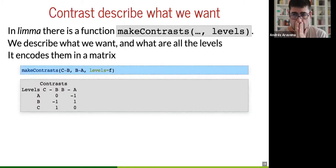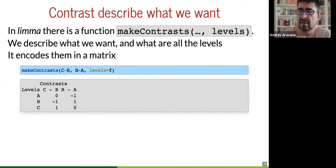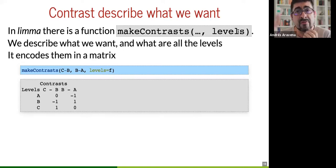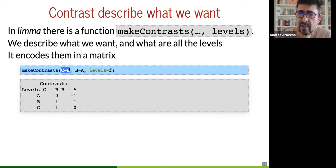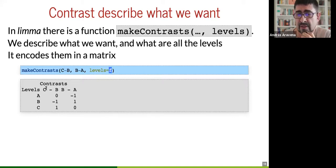Instead, we use a model without intercept and with contrasts. In Limma, there is a function called make.contrasts that takes a description of the contrasts you want to do. You have to say what are the levels. For example, we say we want C minus B and B minus A from factor F with levels ABC — and the contrasts we want are C minus B and B minus A.